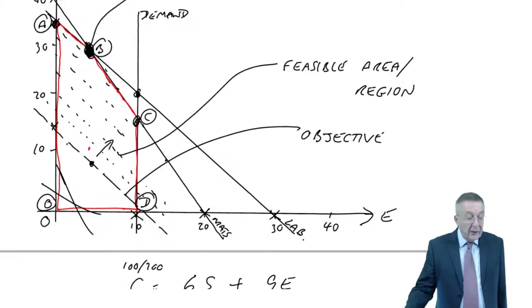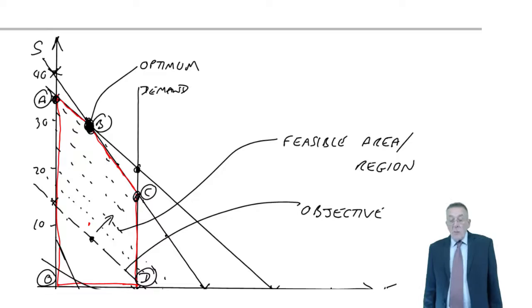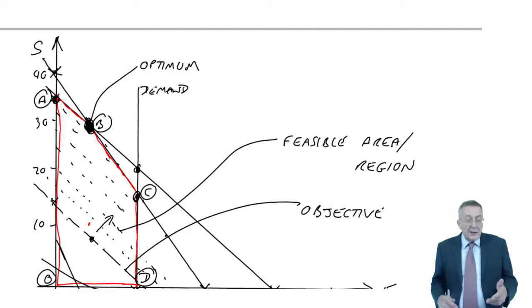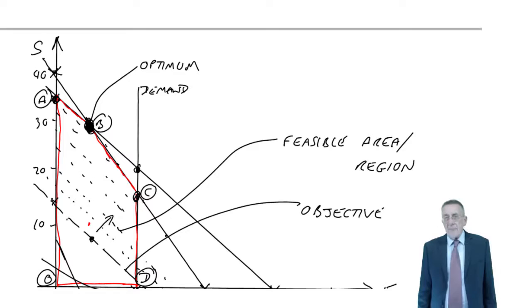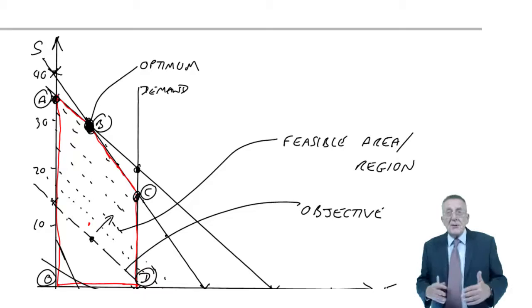If you move on to example two, it says using the information from example one, calculate the slack for each of the constraints - materials, labour, and demand. What we mean by slack is, is there any spare capacity? Are we using all of the constraint or not?